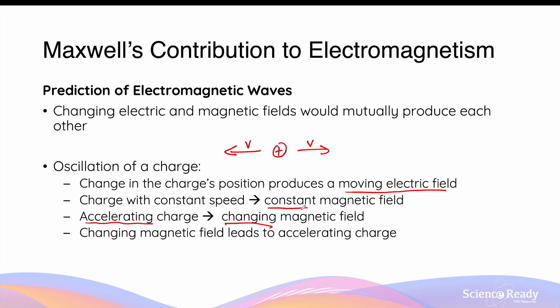When there's a changing magnetic field, by Faraday's law of induction, there will be an emf, which gives rise to an accelerating charge, and the accelerating charge will produce a moving electric field.